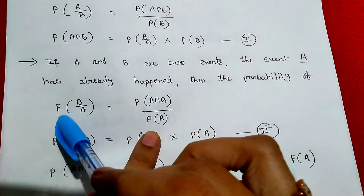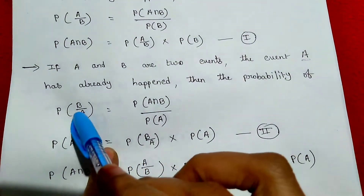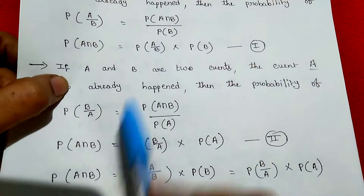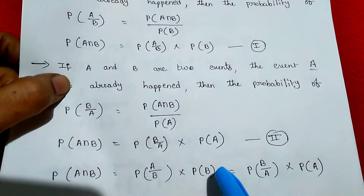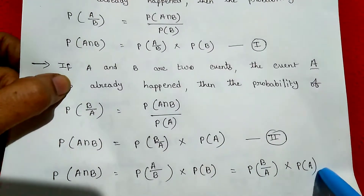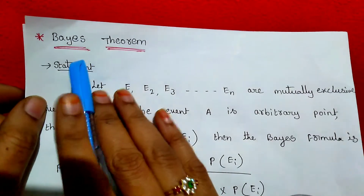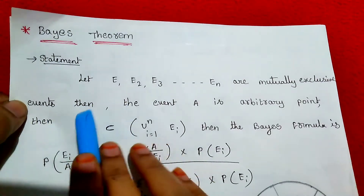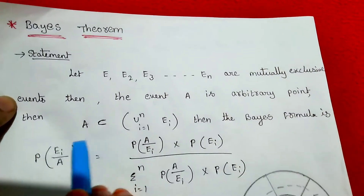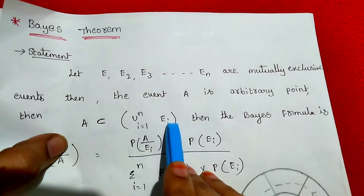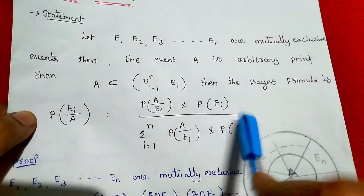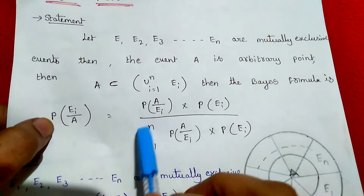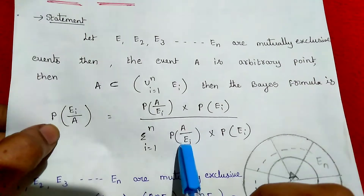This is the conditional probability. Bayes' theorem statement: Let E1, E2, E3, and so on EN be mutually exclusive events. Then the event A is an arbitrary point, where A is a subset of the union from i equal to 1 to N of Ei. Then the Bayes' formula is: probability of Ei given A equals probability of A given Ei times probability of Ei, divided by the summation from i equal to 1 to N of probability of A given Ei times probability of Ei.